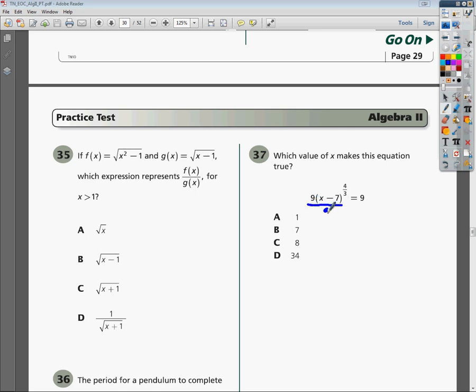So you divide both sides of your equation by 9. Well, of course, on the left side, your 9s just cancel out, and you have (x - 7) raised to the 4/3 power equals, well, 9 divided by 9 is just 1.